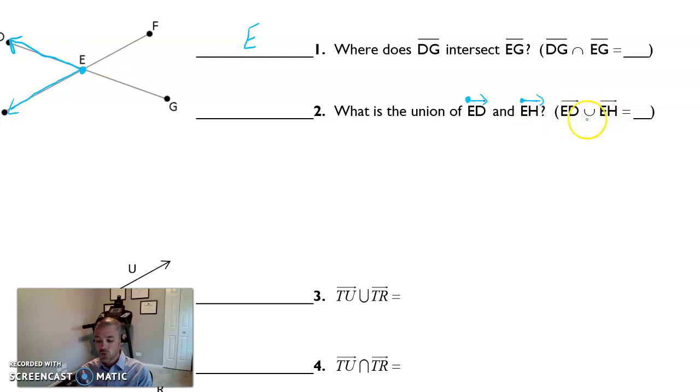And what is the union of those? So that means everything put together. If I put those two rays together, what does it form? Well, it forms an angle. Now, very specifically, two important things about angles.